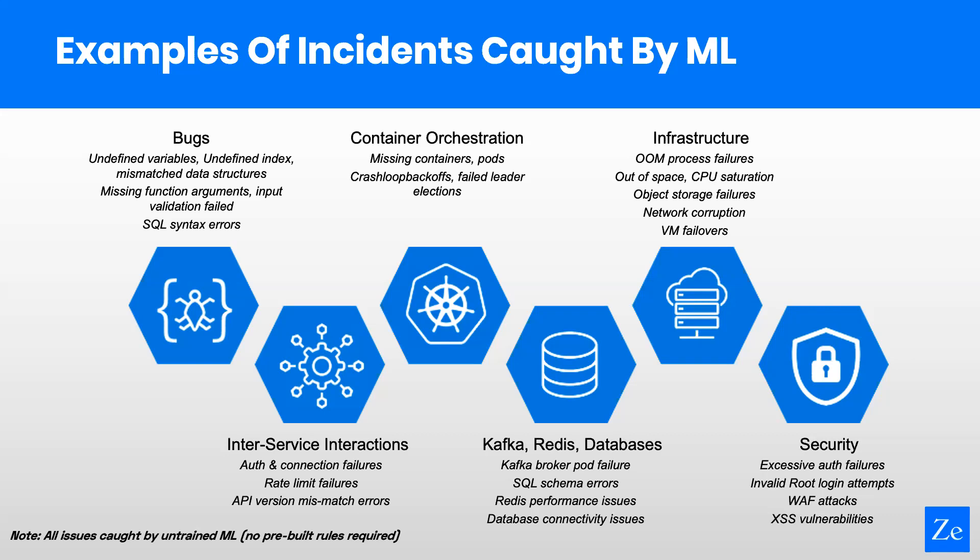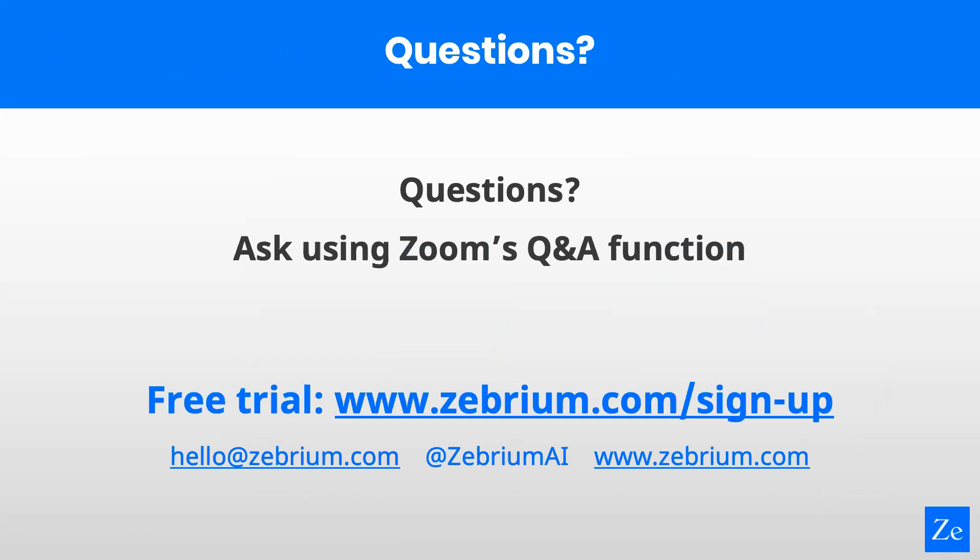The second use case, which most customers use, is proactive detection. Zebrium is always scanning data looking for clusters of anomalous patterns across your logs and pulling in metric anomalies. You don't necessarily want to be paged at night for every finding, but this gives a great mechanism for detecting new failure modes and proactively catching things you're not aware of. In your own time you can scan our list of root cause reports, and if you see anything interesting, drill down and take action.